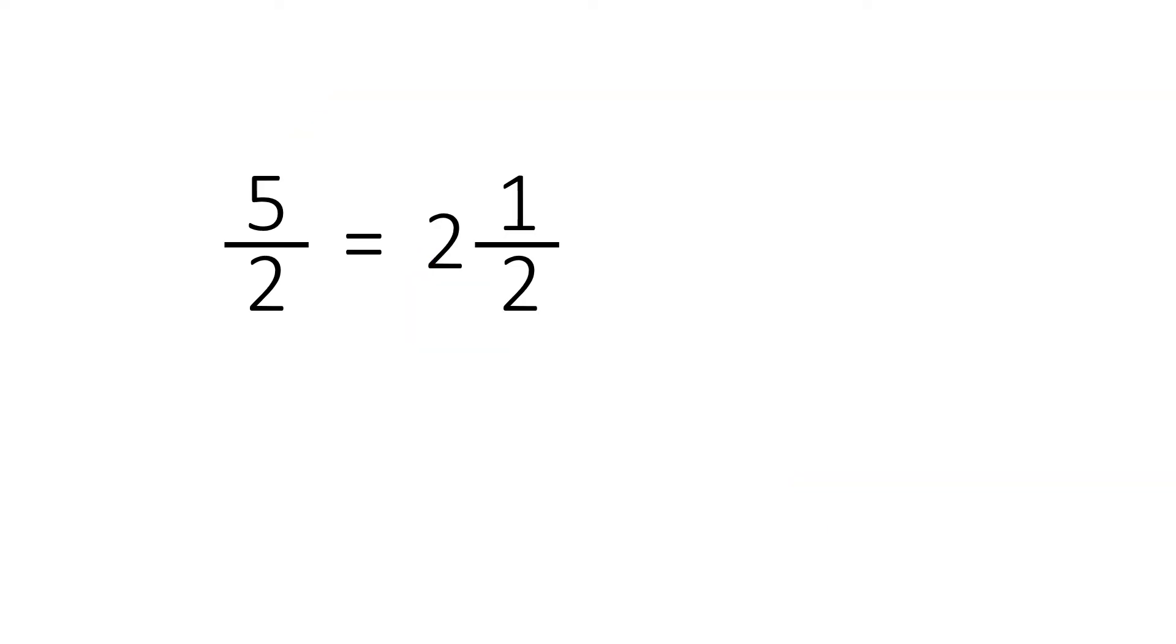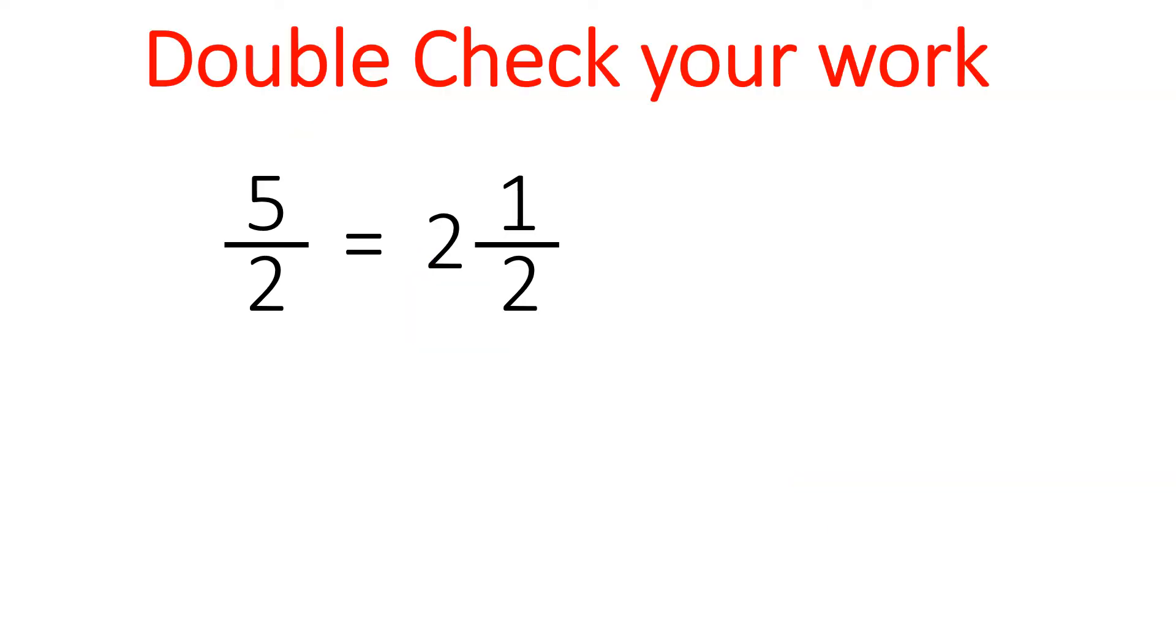To excel in math, we always double check our work. So we take this 2 and 1/2 and what we do is we take the denominator, 2, multiply by this 2, that will equal 4. Then we take 4 plus the numerator, and that will equal 5. So we write 5 on top, draw the little dividing line, and the denominators will always stay the same. So we put the 2 right up here.